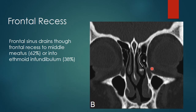An important structure to note is an anterior ethmoid cell in close relationship with the frontal recess, called the agger nasi cell. The importance of this cell lies in the fact that if it is very large or highly pneumatized, it can block the frontal recess, hence blocking the secretions of the frontal sinus, leading to stagnation and chronic sinusitis of the frontal sinus.